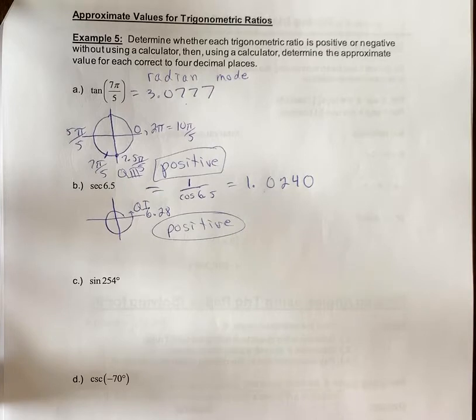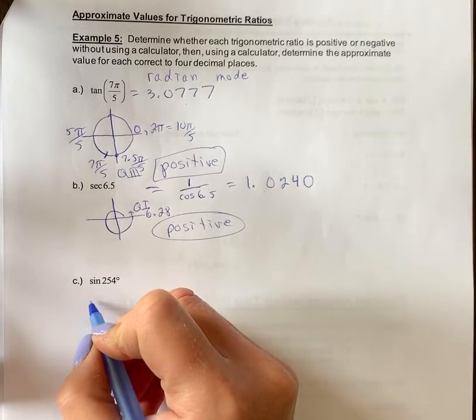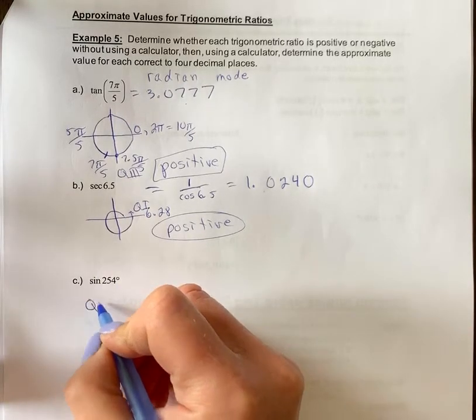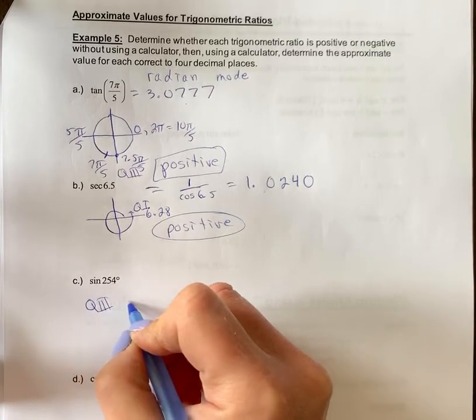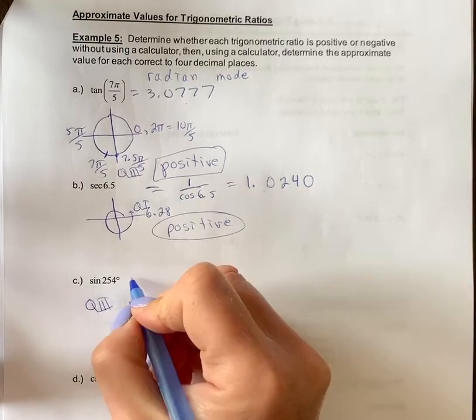Example C, sine of 254 degrees. This had been one question you would have asked before. You can tell that this is between 180 and 270, so that would be quadrant 3. Sine in quadrant 3 is negative, so it's a little easier with degrees to determine where that is.